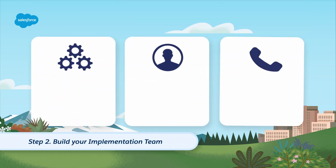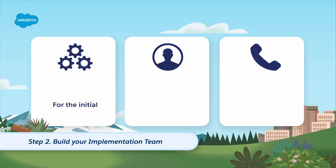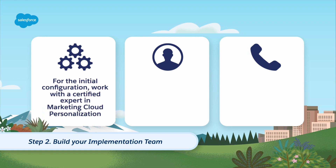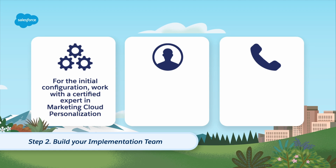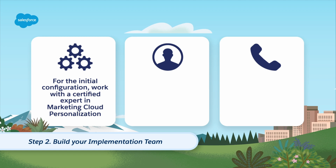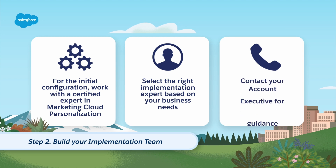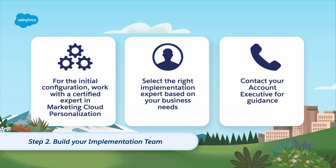Step two: build your implementation team. For the initial technical configuration, we strongly recommend using a trained implementation partner who is certified in Marketing Cloud Personalization. Working with experienced experts ensures a smooth and quick implementation. Select the right implementation expert based on your business needs, and contact your account executive for guidance.